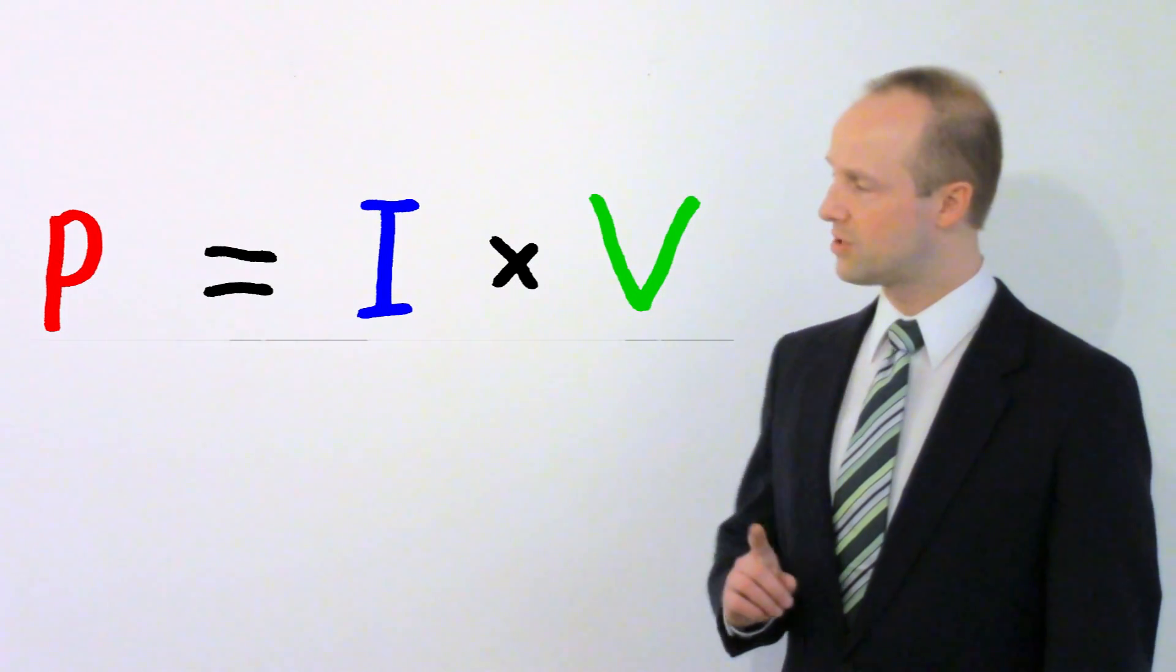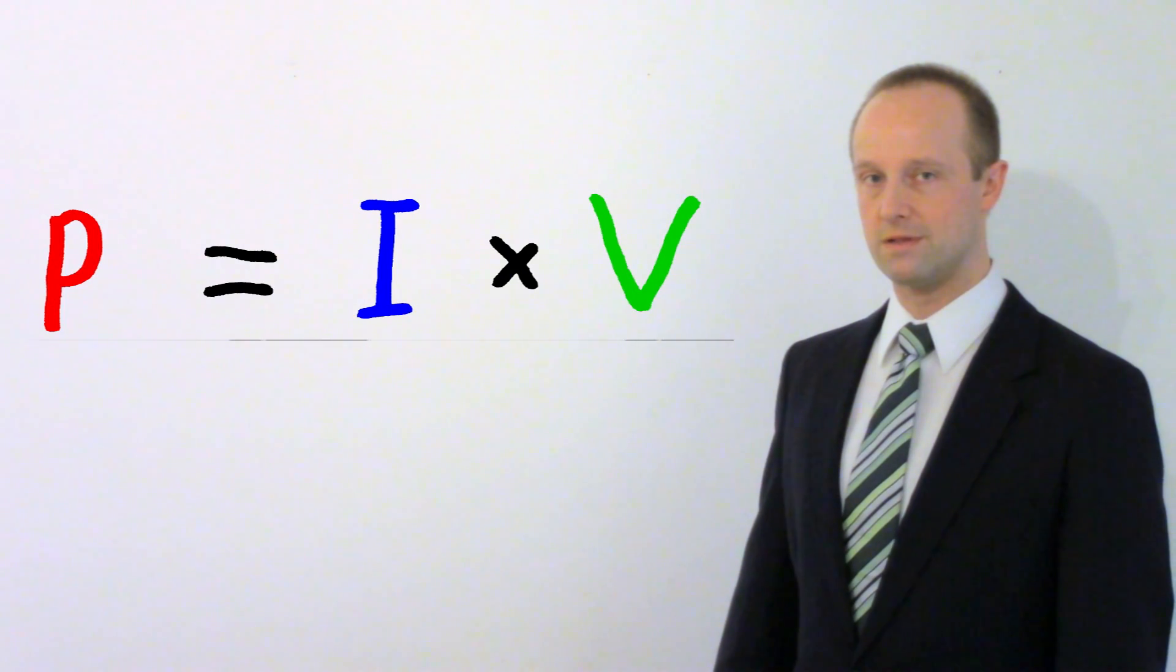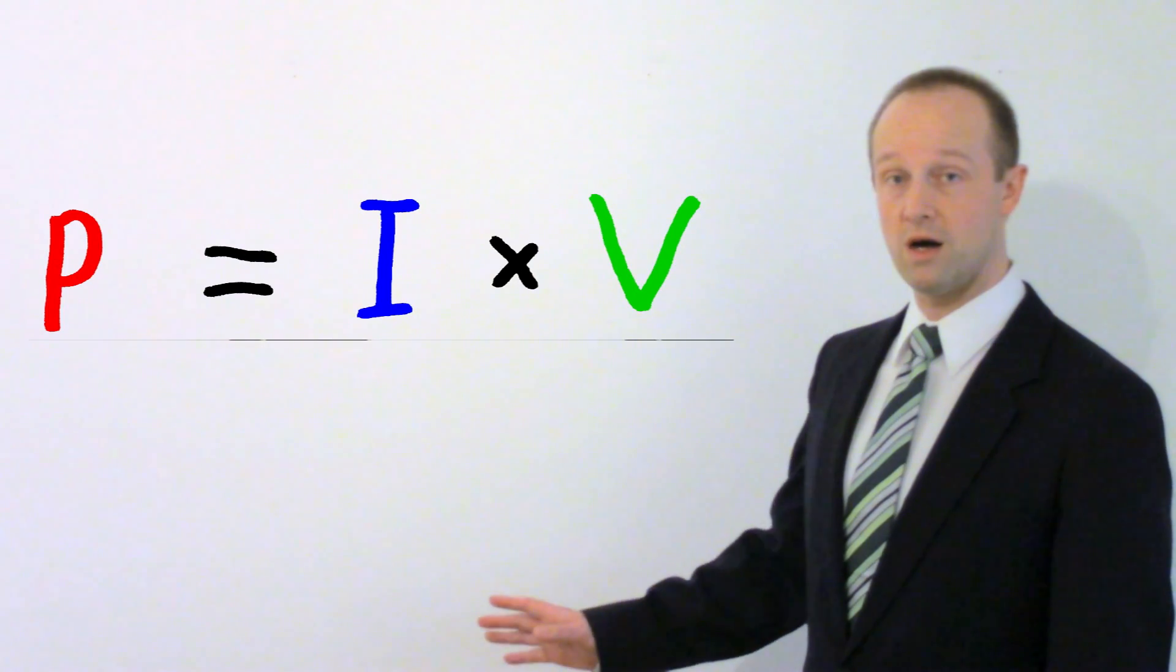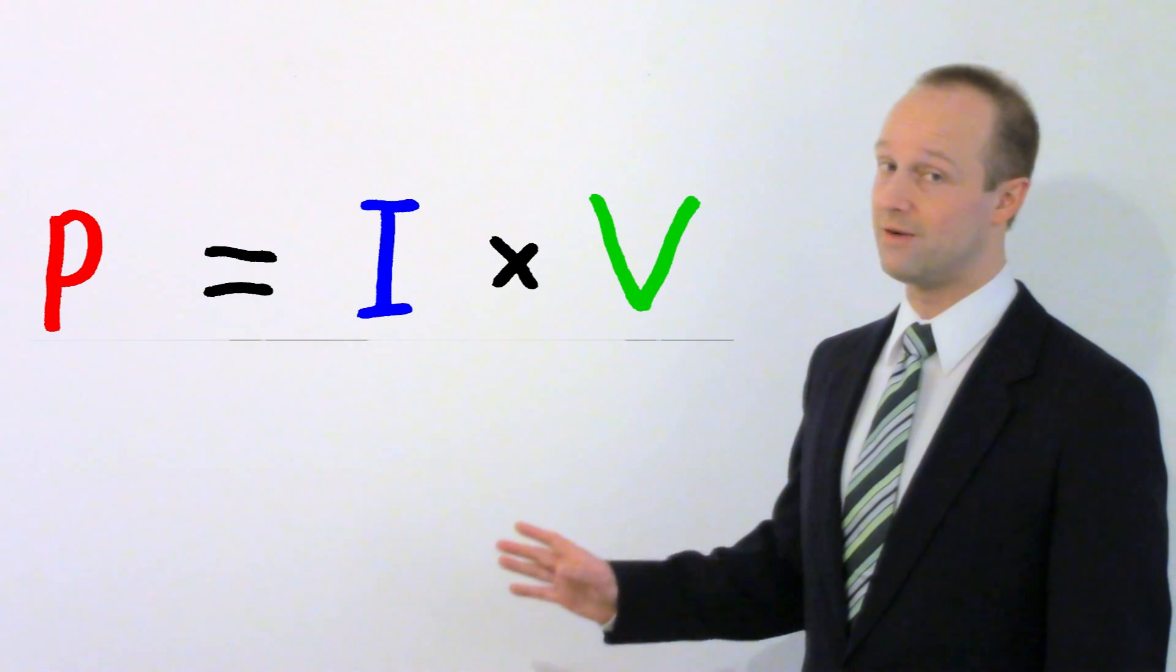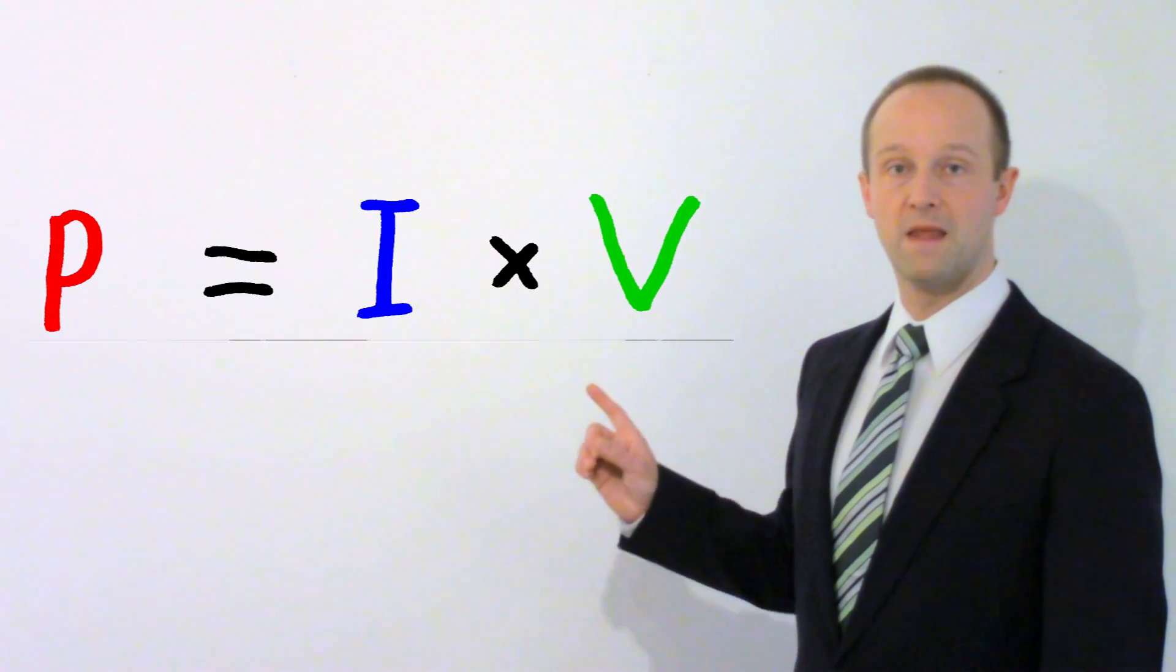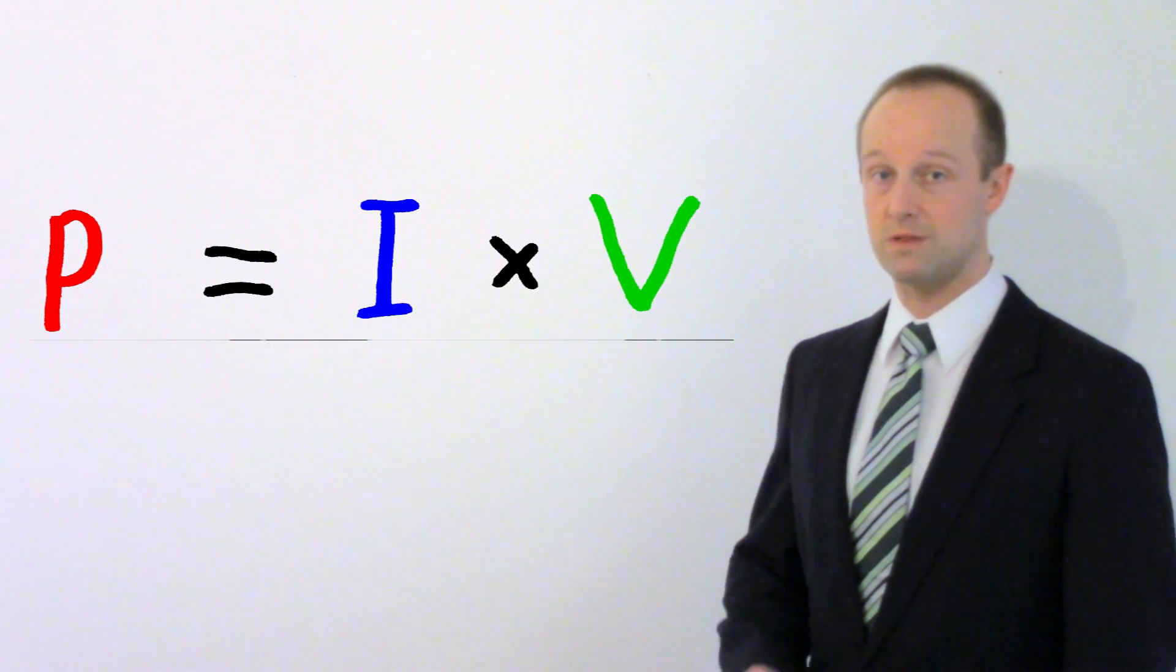But you're changing the potential difference. So if you've made the potential difference much bigger but you can't change the amount of power, you have a fixed amount of power, then to compensate for that, the current has to be much smaller.